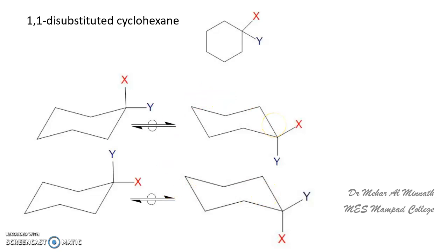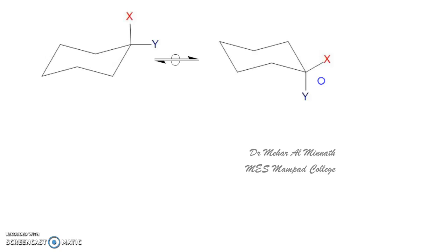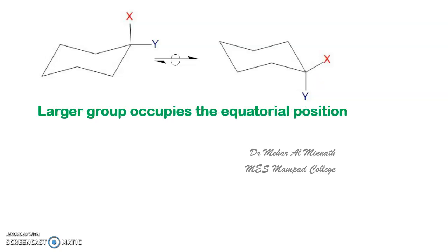Now which is energetically more stable — the first case or the second case? That depends on the size of x and y. It is generally seen that if the substituent is larger, it prefers to occupy the equatorial position. So if x is a bulkier group, then the conformer wherein x is in the equatorial position will be more stable.